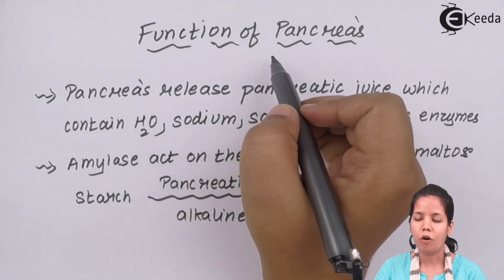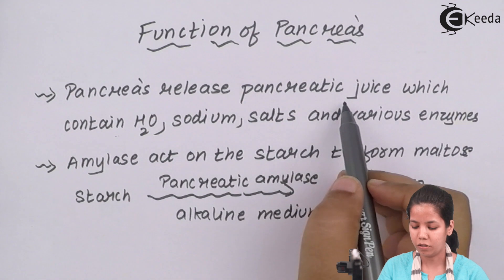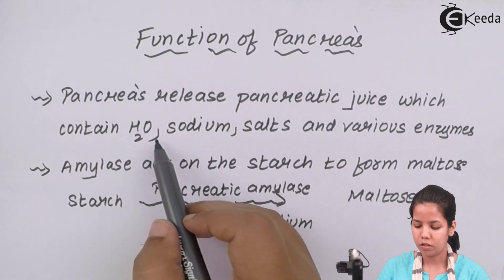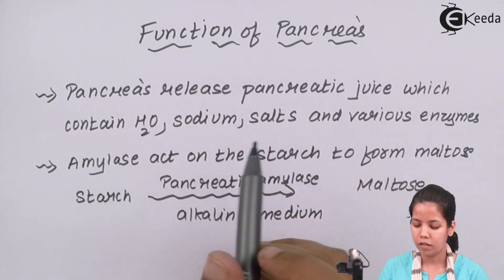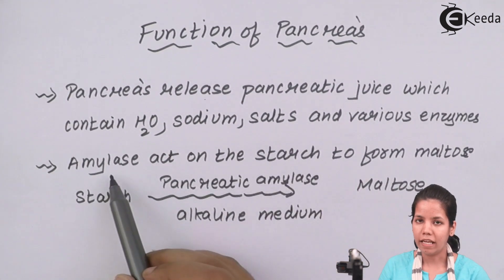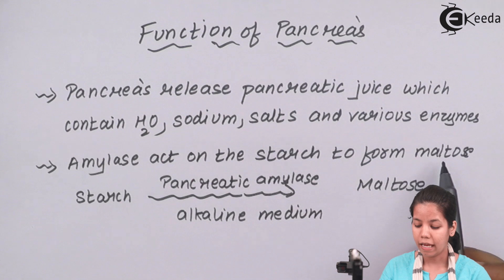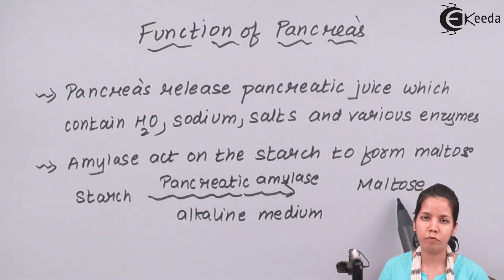To recap the function of pancreas: the pancreas releases pancreatic juices, and these pancreatic juices contain water, sodium salts, and various other enzymes. One of the enzymes released is amylase, which acts on starch to form maltose. This reaction happens in the alkaline medium present inside our body. Maltose is one of the forms of sugar present inside our body.